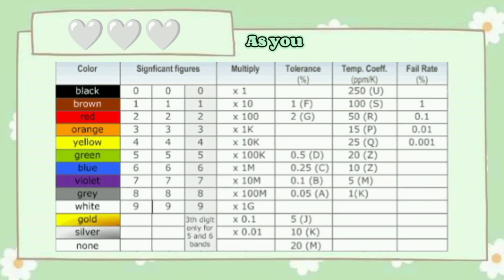As you can see, black is 0, brown is 1, red is 2, orange is 3, yellow is 4, green is 5, blue is 6, violet is 7, gray is 8, and lastly white is 9. So this is what we call the first band.